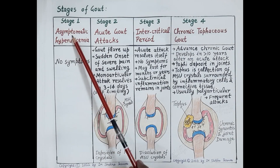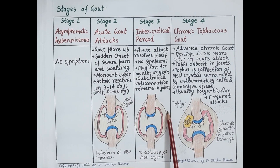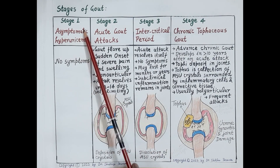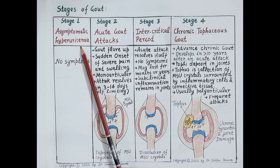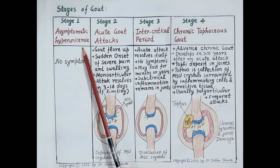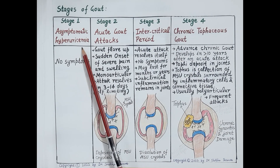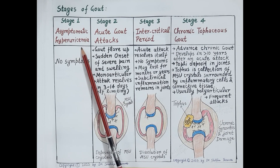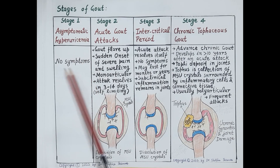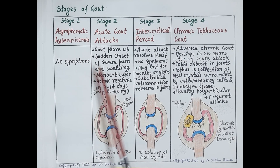This chart describes the different stages of gout. Stage one is asymptomatic hyperuricemia. Here the blood uric acid concentration exceeds 6.8 mg per deciliter, but there are no symptoms of gout.